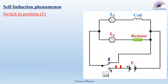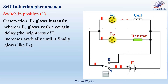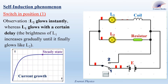Let's start the animation by turning the switch to position 1. When I start the animation, look carefully to compare the brightness of the two lamps. We observe that L2 glows instantly, whereas L1 glows with a certain delay — the brightness of L1 increases gradually until it finally glows like L2. This graph shows the growth of the current in the coil: the current starts at zero and increases to become maximum at a state called the steady state.